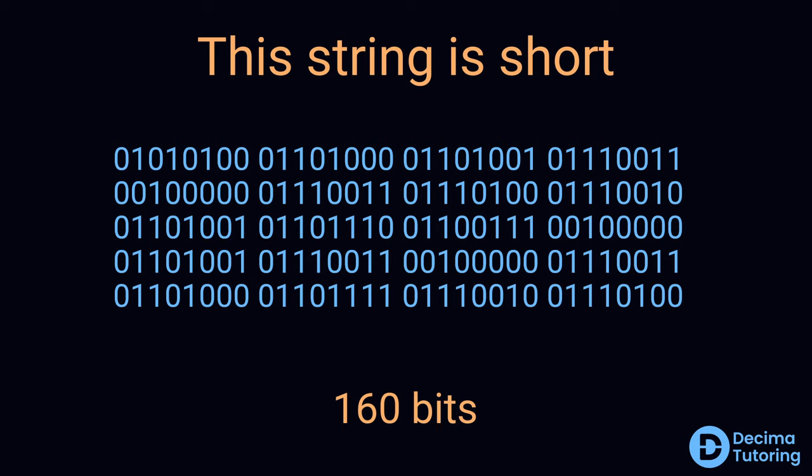Huffman coding is a way in which we can encode these bits in such a way that we can reduce the number of bits required to store the string, and it kind of makes sense intuitively. The string has only 10 unique characters including the space character, and an 8-bit value can store up to 256 unique characters. So there is a lot of redundancy in these bits.